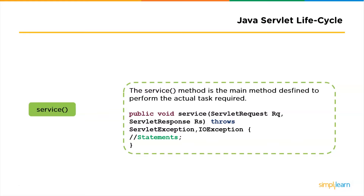The service method calls do-get, do-post, do-put, do-delete, etc., as appropriate. The service method is called by the container, and in turn invokes do-get, do-post, do-put, and do-delete as appropriate. So you have nothing to do with the service method directly — you override either do-get, do-post, or other types depending on what type of request you receive from the client. This is how the init and service methods work.